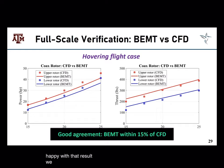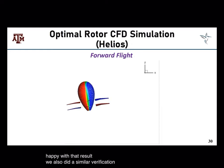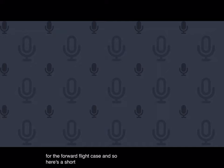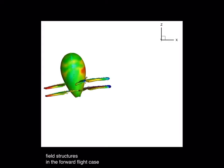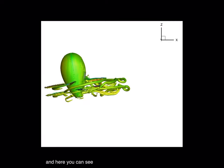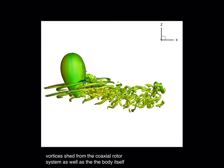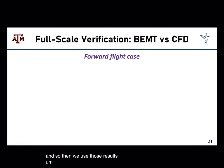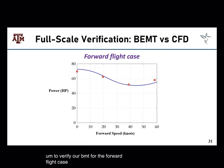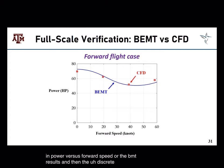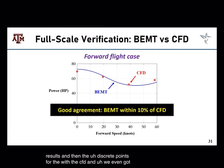We also did a similar verification for the forward flight case. Here's a short video showing the flow field structures in forward flight, including vortices shed from the coaxial rotor system as well as the body itself. We then used those results to verify our BMT for the forward flight case, shown here as power versus forward speed, and we got even better agreement — within about 10% of each other.